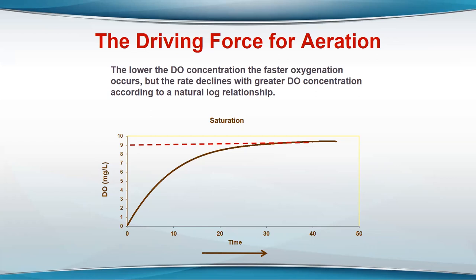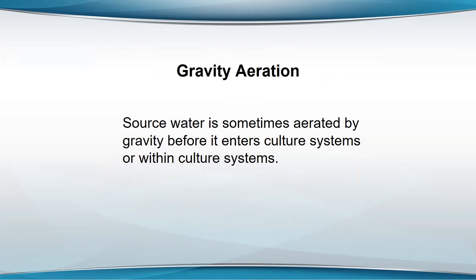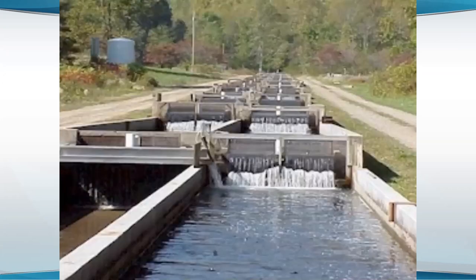Paying attention to the oxygen concentration and staging the aeration is important. In terms of types of aeration, there's gravity aeration, where you use gravity to aerate the water. Trout raceways are a good example — as those raceway units go down the slope, the water falls from one to the other, and that white water where the water is falling provides some reaeration.